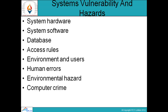Environment and users: IS for retail businesses can be in different locations. It is important that IS are placed in a secured environment and only authorized users can operate them. Human errors can make IS weak. Errors can occur in the design of hardware and software, so human errors should be minimized.